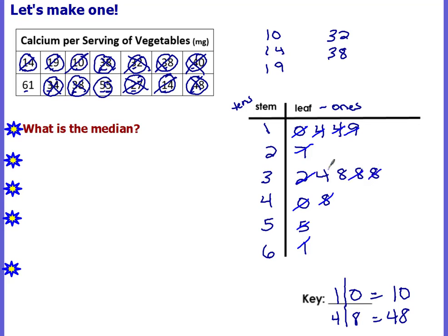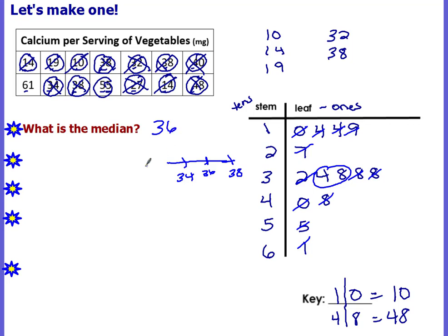You'll see that the median falls in between thirty-four and thirty-eight. So if I do a number line with thirty-four and thirty-eight, what falls exactly in the middle? Thirty-six. So the median would be thirty-six.